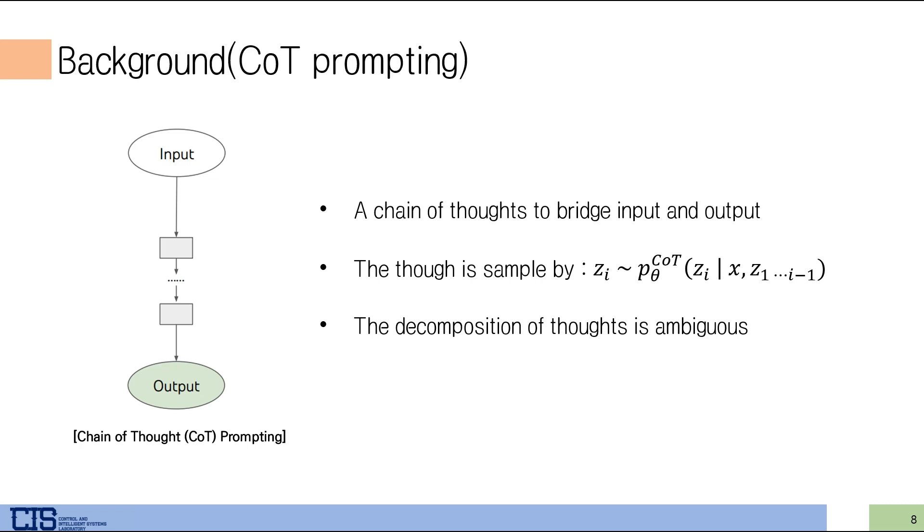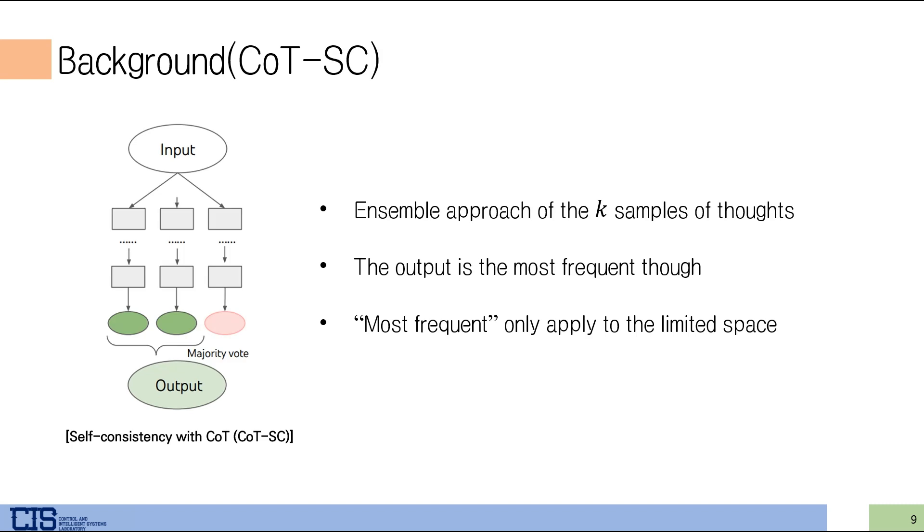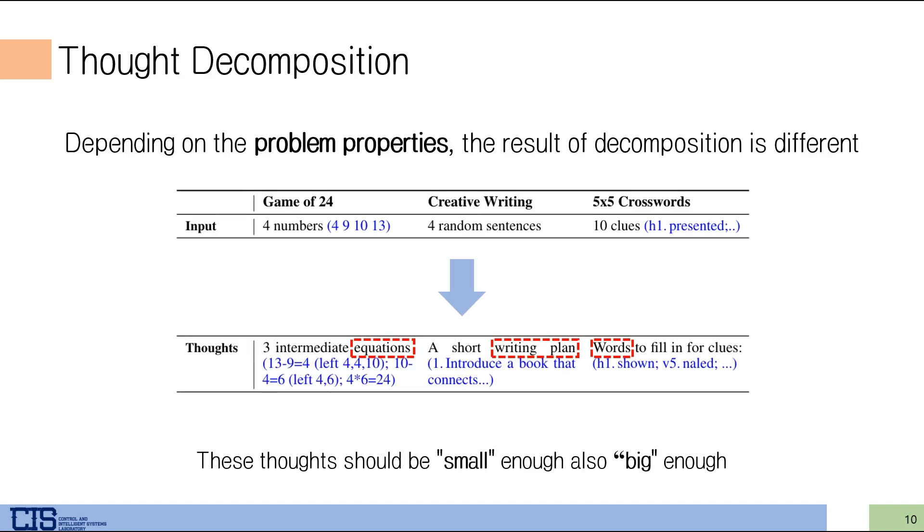Before ToT, there exists an approach that uses LM for problem solving. Chain of Thought generates sequential thoughts which bridge input and output. Each thought is generated by sampling, but there is a limitation that the decomposition of thoughts is ambiguous. Self-consistency with CoT is an advanced CoT model, and they use an ensemble approach with thoughts. The output is majority vote, and it solves ambiguous problems, but they can only be applied to limited spaces.